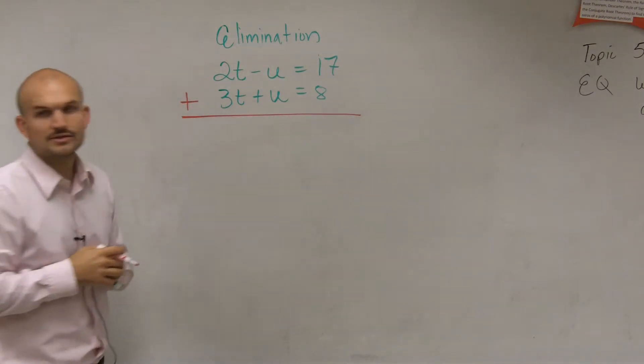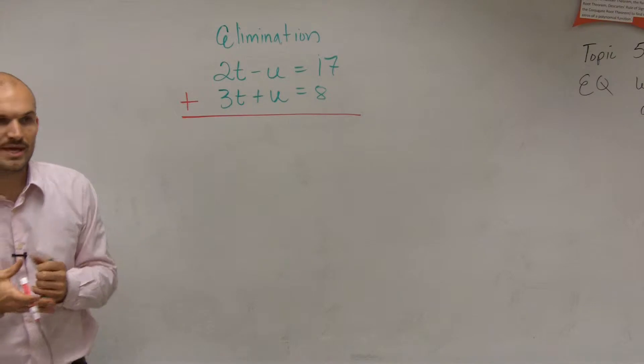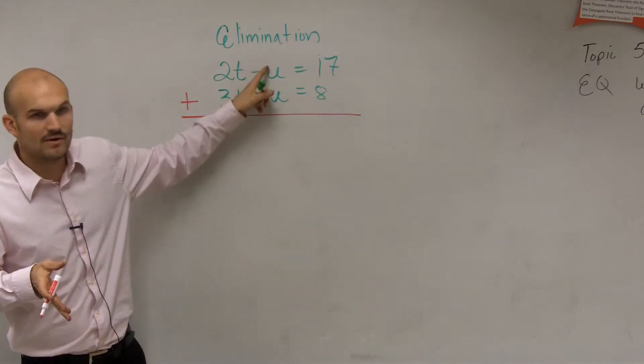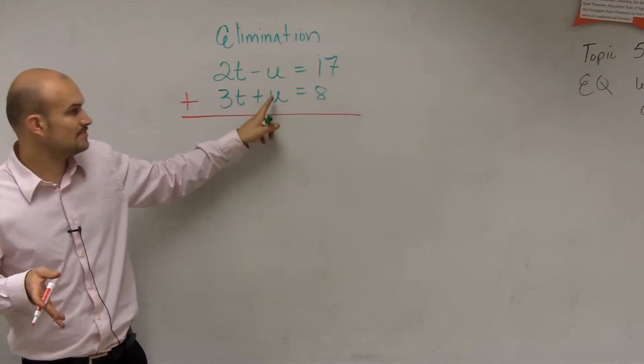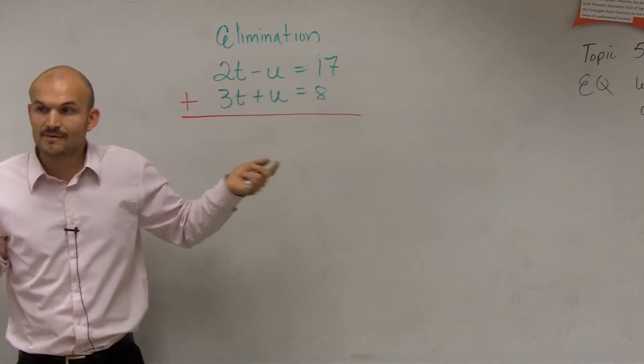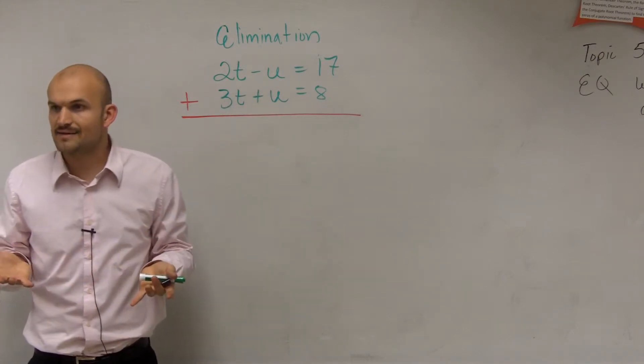So when you have the same coefficient being one positive and one negative, to do elimination, what you're going to want to do is add them up. You're going to add the two equations. So if you have equations, two equations, with the same coefficients, they both have one, except this is a positive and this is a negative. When you have them positive and negative, add them up.